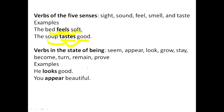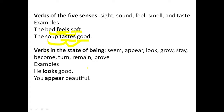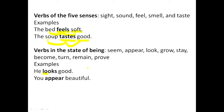Another component making linking verb is verbs in the state of being: seem, appear, look, grow, stay, become, turn, remain, prove. These are verbs we refer to as verbs in the state of being. They do not express action. To know whether they have been used as a linking verb, always use verb to be as the litmus test. Example: he looks good. Substitute is — he is good — it makes sense. So looks is a linking verb.